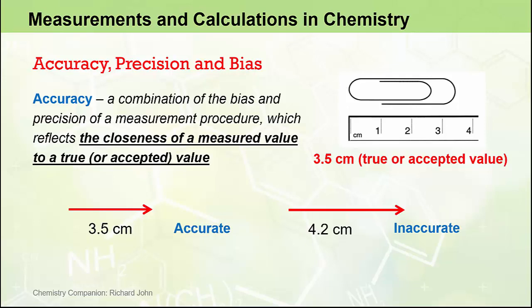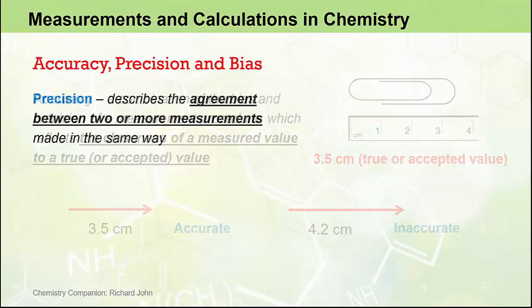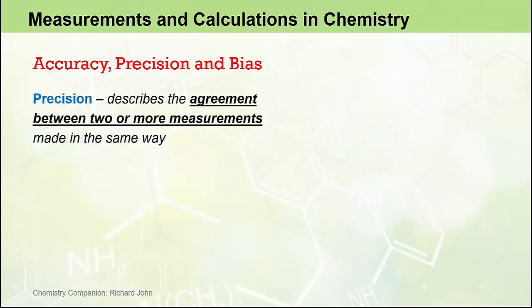To a certain extent common sense applies here — accuracy is about how close our measured value is to the true or accepted value. Now precision is something else, and in everyday language we often interchange the terms accuracy and precision. In science we need to understand the difference between the two. Accuracy refers to how close a measurement is to a true or accepted value, whereas precision describes the agreement between two or more measurements made in the same way.